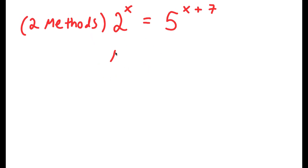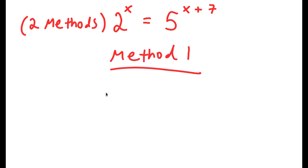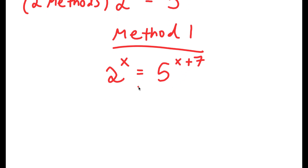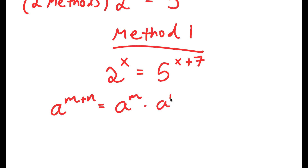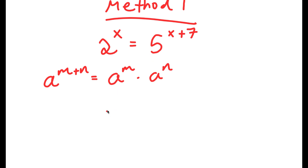For my first method, I'm going to write the problem: 2 to the power of x is equal to 5 to the power of x plus 7. If I have something in the form a to the power of m plus n, this is equal to a to the power of m times a to the power of n. So 5 to the power of x plus 7, I can write that as 5 to the power of x times 5 to the power of 7.